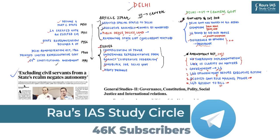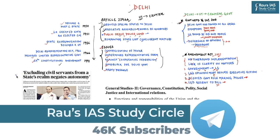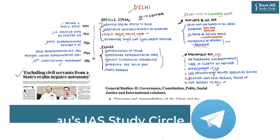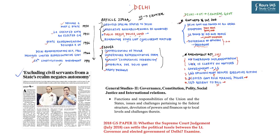The first article has appeared on page number two, which is the page for regional news and may not be visible to everyone across the country, but the topic is very important. The heading of the article is 'Excluding civil servants from a state's reign negates autonomy.' The Constitution Bench led by Chief Justice D.Y. Chandrachud on Tuesday asked the Arvind Kejriwal government whether civil servants posted in the national capital in relation to public order, police and land will come outside the purview of the executive power of the Delhi government.